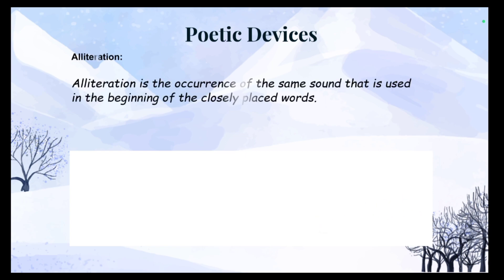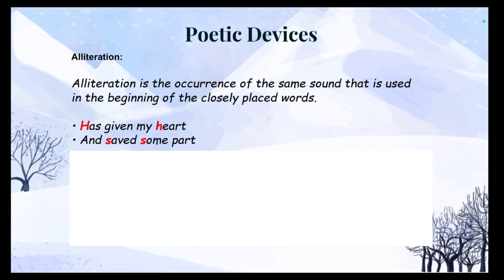The poetic devices or the figures of speech that the poet has employed in the poem are as follows. The first one is alliteration. Alliteration is the occurrence of the same sound used in the beginning of closely placed words. In this poem, we have the line 'has given my heart' where the 'h' sound is repeated, and the next line 'and saved some part' where the 's' sound is repeated.